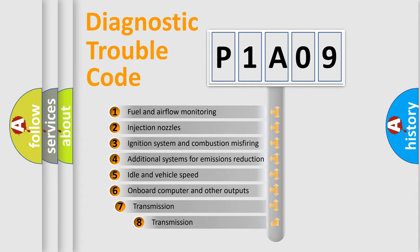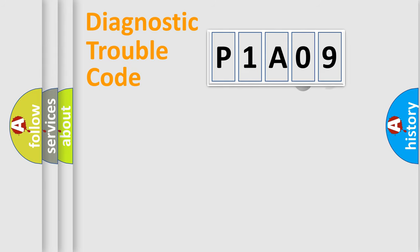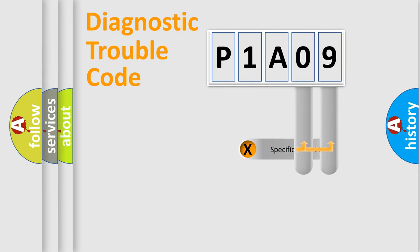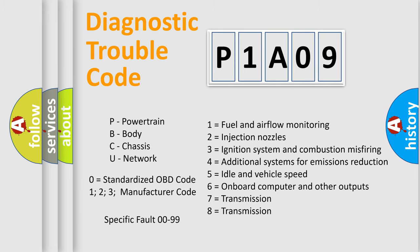The third character specifies a subset of errors. The distribution shown is valid only for the standardized DTC code. Only the last two characters define the specific fault of the group. This division is valid only if the second character is expressed by the number zero.